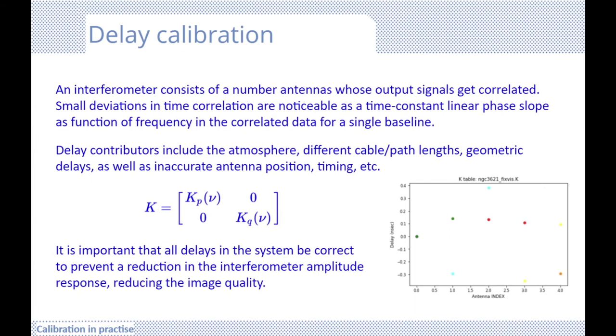Since an interferometer consists of an array of antennas whose output signals get correlated, maximum coherence will occur when all these signals are in sync and arrive from all the antennas at the same time. But through the fringe relation of the measurements, small delays in arrival time between the antenna signals will cause phase errors in the correlated data. These small deviations will show up as a time constant linear phase slope, as a function of frequency in the correlated data for a single baseline. If the frequency channels of an observation are averaged into a continuum image, an uncorrected delay will cause decorrelation of the continuum signal.